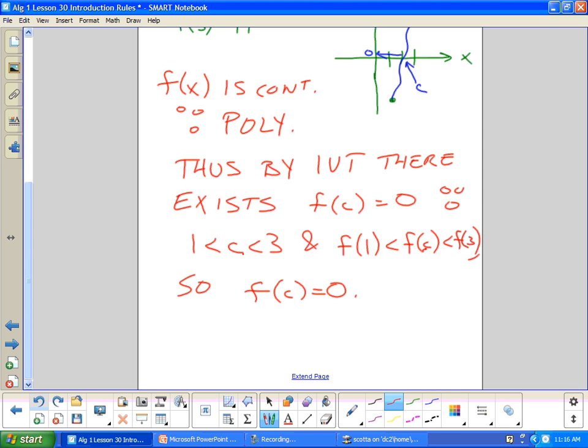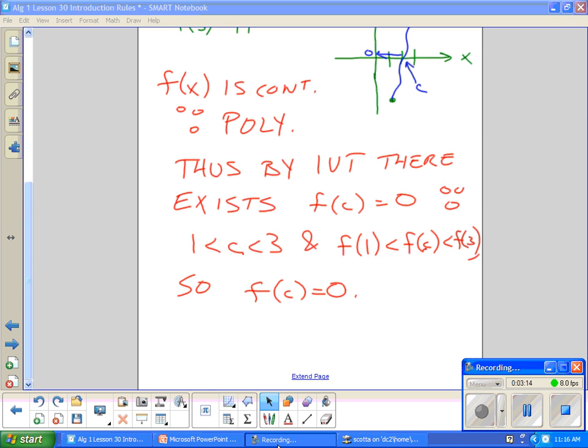Now this proves there is one root. There could be two roots. There could be three roots. I don't know. This only proves for sure that there is one. That's all you need to prove is that there is one. Proved by IVT.